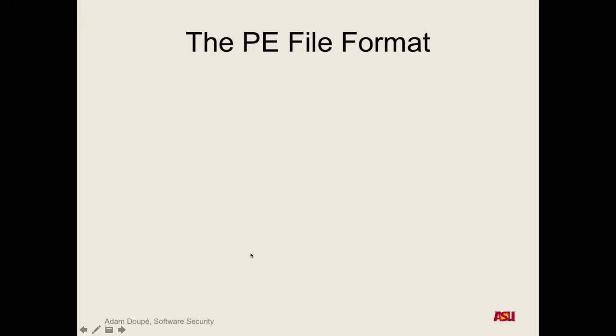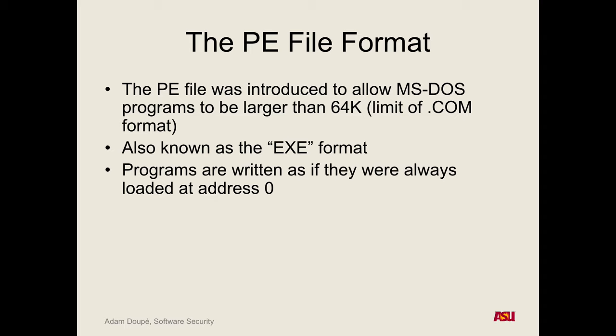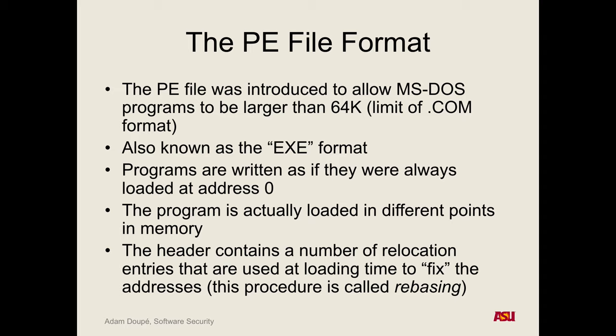The PE file format is the .exe file format on Windows — the standard .exe format. There are a lot of differences from ELF. All PE programs assume they're going to be loaded into address 0, so address 0 is going to be the first instruction. However, all programs are not actually loaded at memory address 0 — they're moved around, and the OS knows to fix this up via relocation.